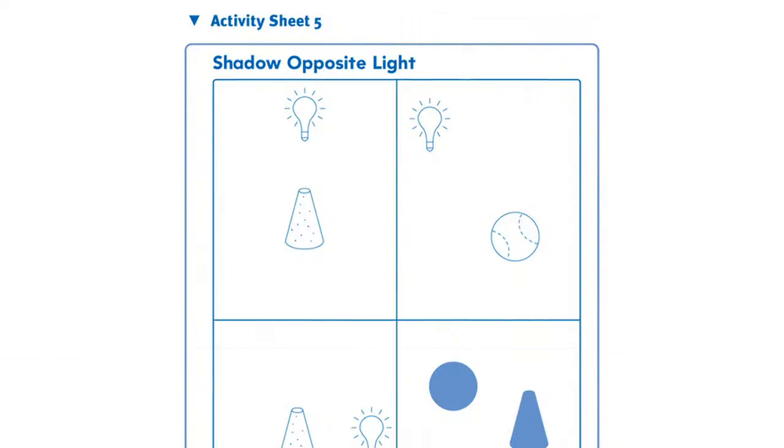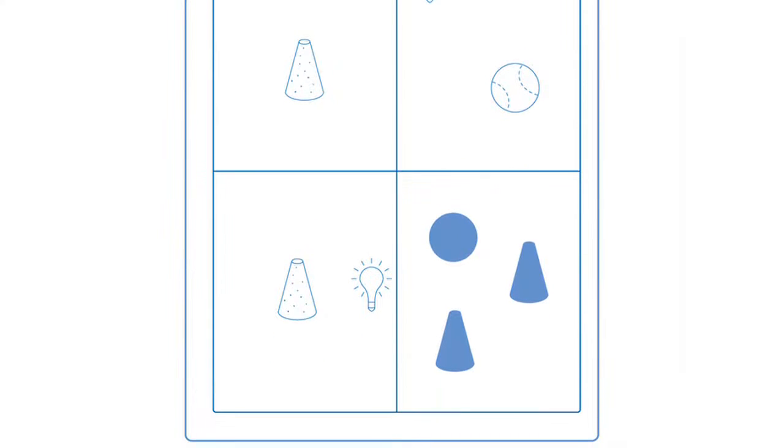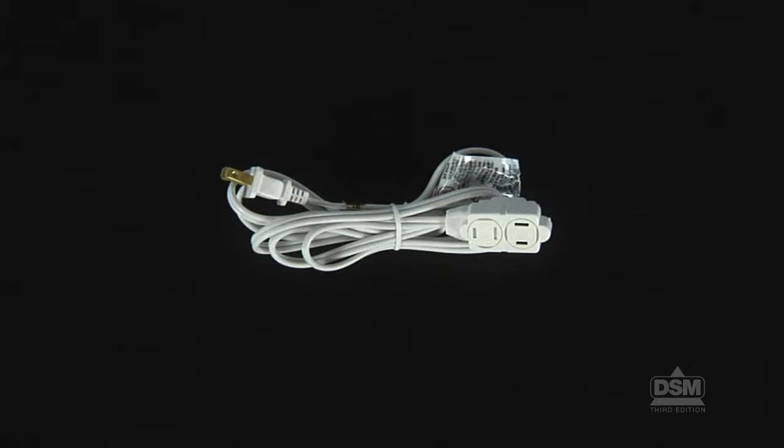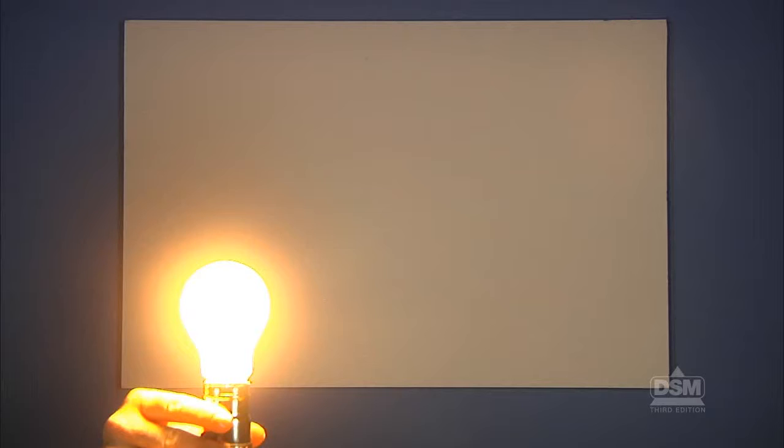To prepare for the activity, make a copy of Activity Sheet 5 for each student. Note that this activity must be done on a sunny day. Prepare the room so that it can be darkened as much as possible. Collect extension cords as needed and plug in the light sources with light bulbs and place them on desks or tables.